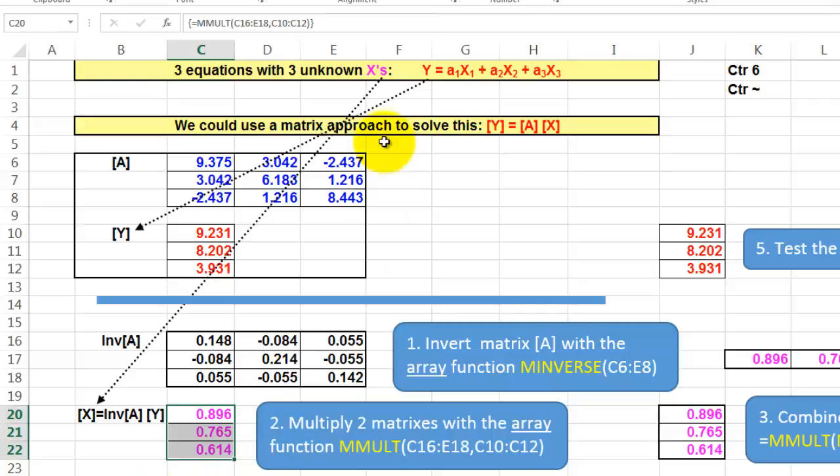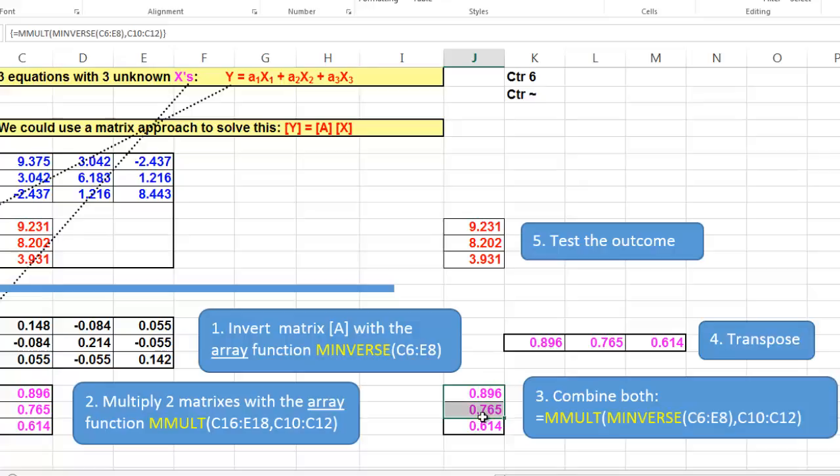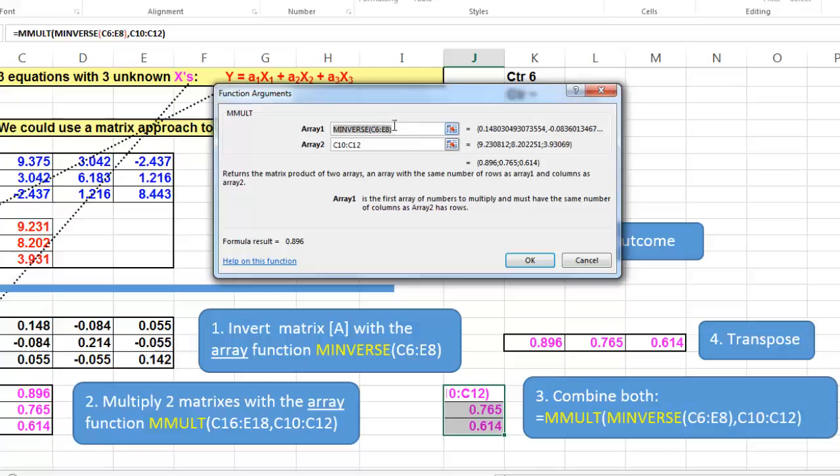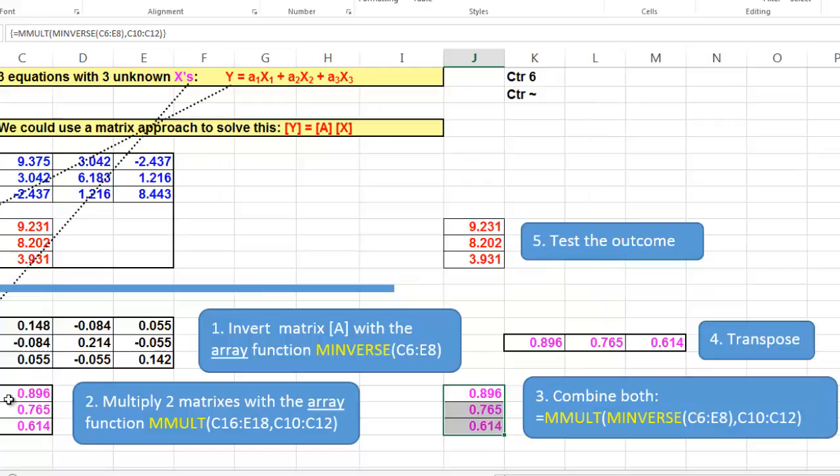We did this in two steps. I could have combined those two. I could have nested matrix inverse inside matrix multiply. I did that here in a combined action. So the formula is basically: array 1 is the matrix inverse version of C6 through E8, and array 2 is still the regular one C10 through C12. Ctrl-Shift-Enter. And we get these results exactly the same as those results, but we did it in one step with a nested function.